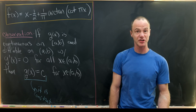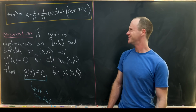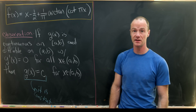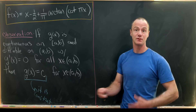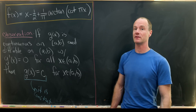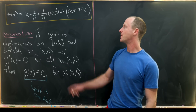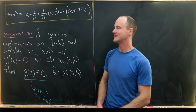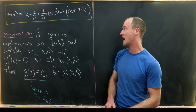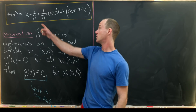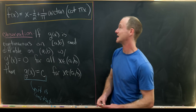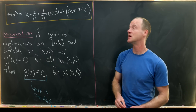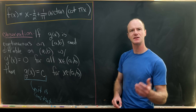Today we're going to explore an interesting function. This function looks a little strangely concocted, but it's pretty nice once you unravel exactly what it is. And that function is defined as follows: x minus one half, plus one over pi times the arctan of the cotangent of pi times x.